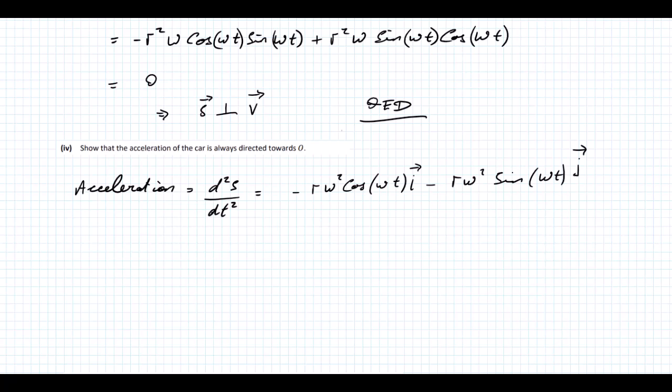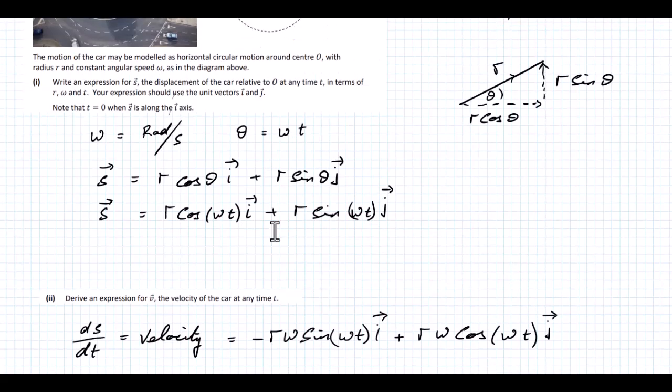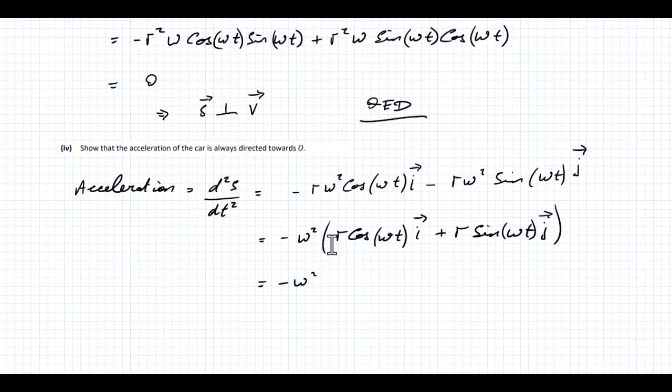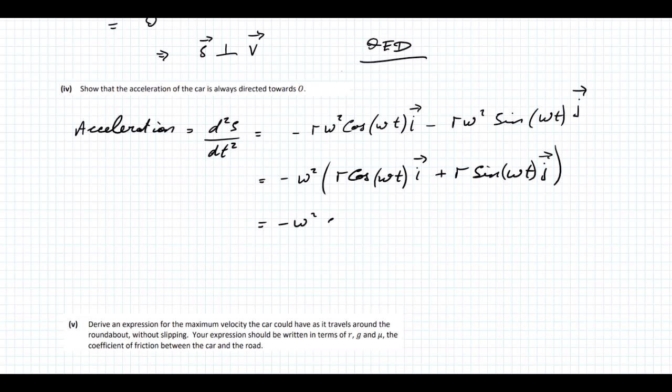If we look at that, I can take out minus omega squared, and I'm left with R cos omega T i plus R sine omega T j. You can see that we end up with minus omega squared, and this thing here is just our displacement vector, R cos omega T i plus R sine omega T j. So I can just replace that with S.